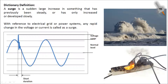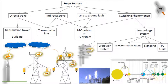Surges are often oscillatory and decaying over time. They are over-voltage spikes that can degrade, damage, or destroy electronic equipment within any residential, commercial, industrial, or manufacturing environment. Now let's see what the different sources of surges are.